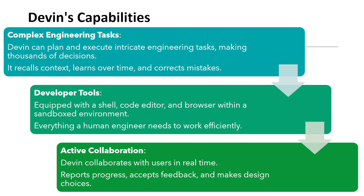There is also active collaboration — Devin collaborates with users in real time. It can talk with your client on its own, report the progress, accept feedback, and make decisions and choices. That means it can work on its own. You don't have to worry about hiring someone — it will handle the clients, take feedback, and give progress reports.